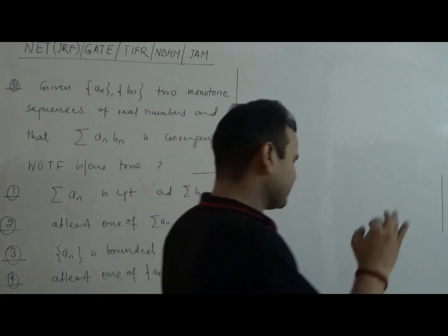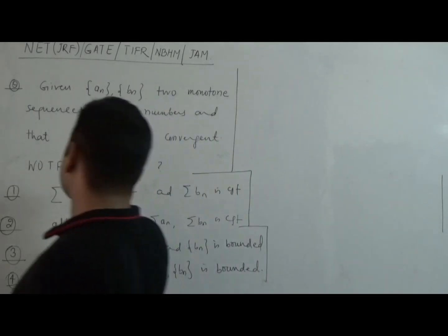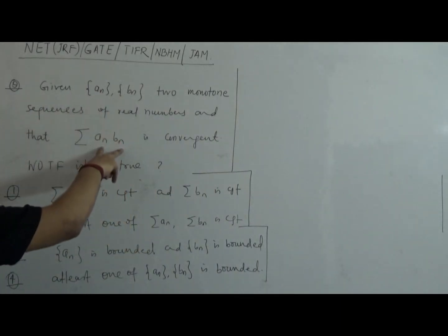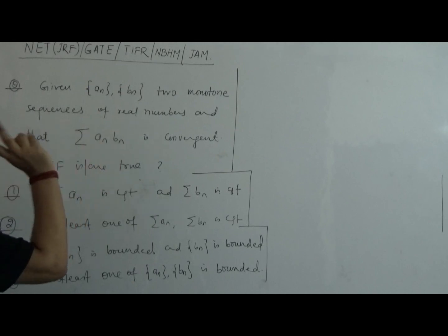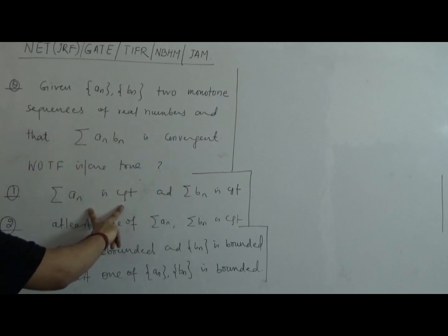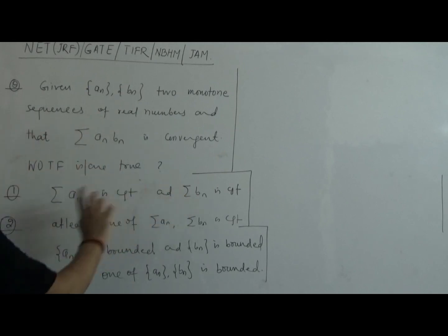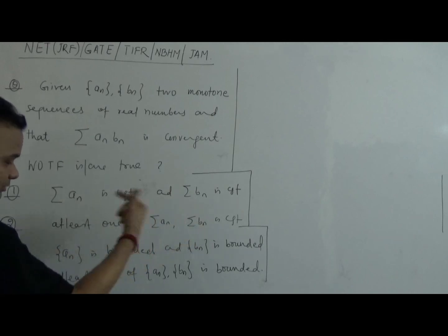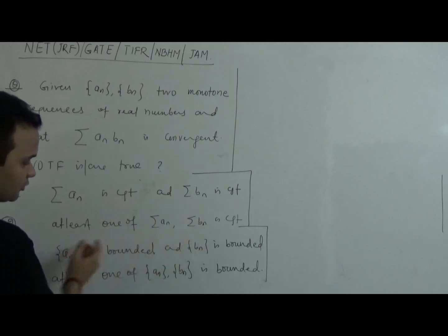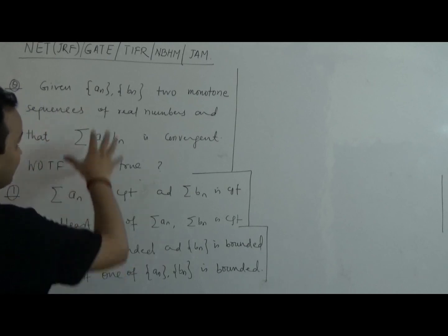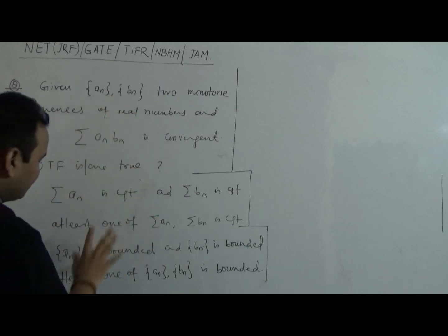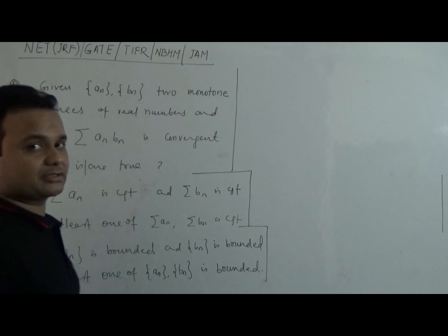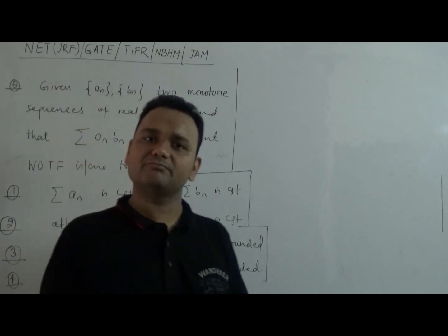So the question is again very simple. You are given two monotone sequences with the condition that the product series is convergent. Then what can you say about their individual sums — is either or both convergent? What can you say about the sequences — does the condition imply boundedness, or at least one of them being bounded?